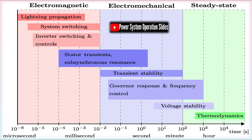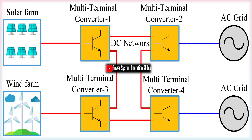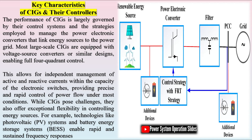Resonance stability deals with the prevention of resonant oscillations that can arise from interactions between grid components. These oscillations, if left unchecked, can amplify disturbances and potentially lead to equipment damage or system-wide instability. These categories offer a comprehensive framework to evaluate and manage modern power systems, especially in an era marked by diverse energy sources and advanced control technologies.